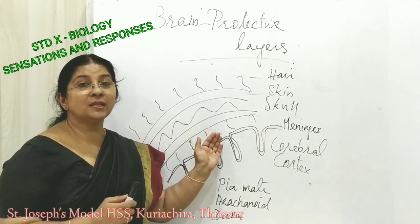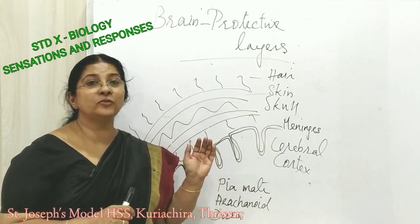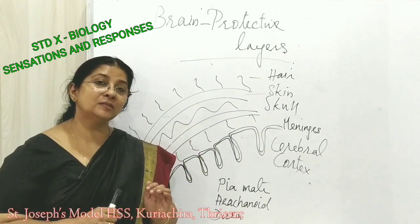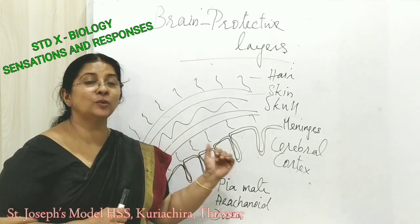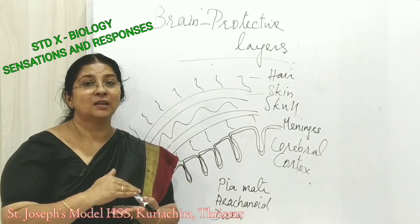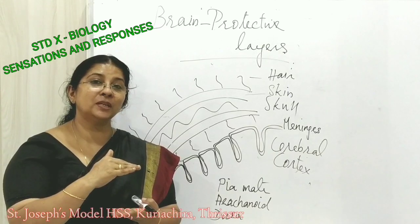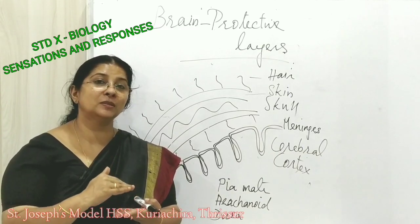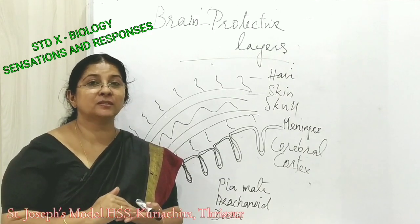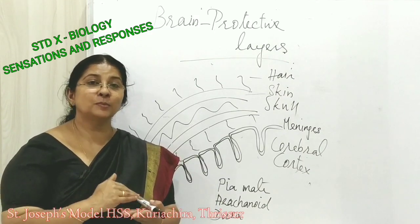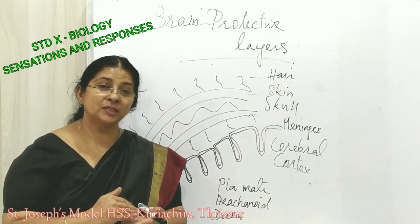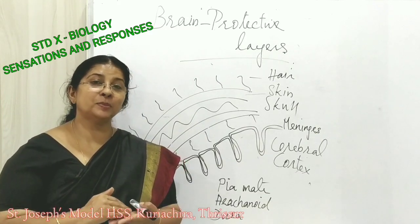The mean volume of CSF in a person is 150 ml. If there is not enough fluid for the brain to float in, the brain will sit onto the skull, and due to the weight of the brain it crushes the blood vessels below, resulting in low blood pressure. The cerebrospinal fluid acts as a shock absorber and protects the brain, and it also regulates pressure.